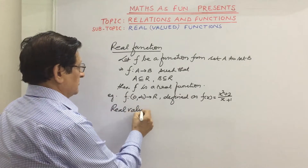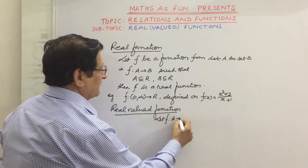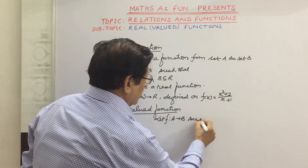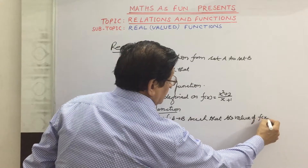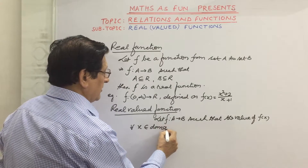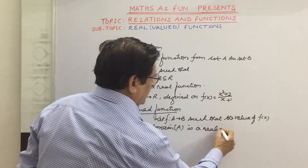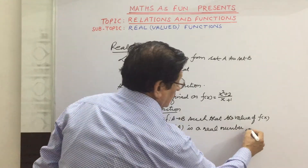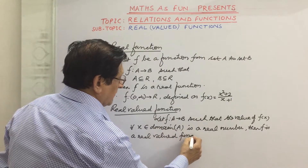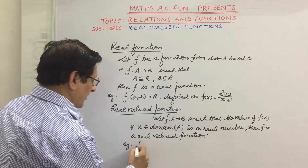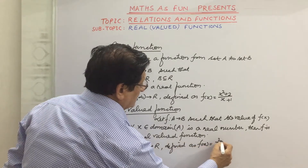Now let us talk about real valued functions. Let f be a function from set A to set B such that the value of f(x) for every x belonging to the domain A is a real number, then f is a real valued function. For example, suppose f from R to R is defined as f(x) = x² + 2.